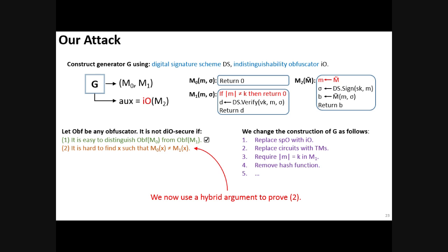In other words, program M1 accepts only the messages of a specific length k, where k is a fixed polynomial, which is a parameter of our scheme. And Turing machine M2 no longer uses hash function. It merely produces a signature on the actual Turing machine M tilde that is being taken.